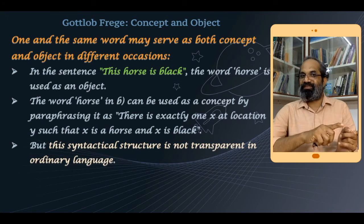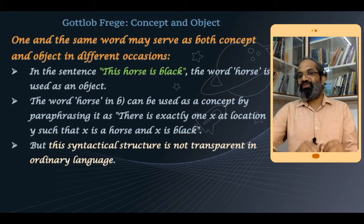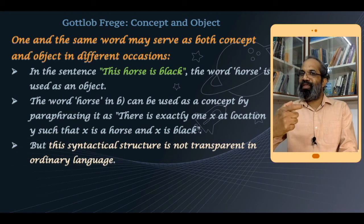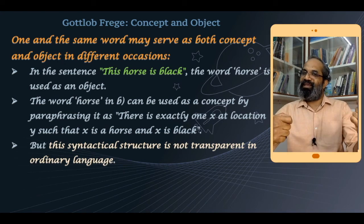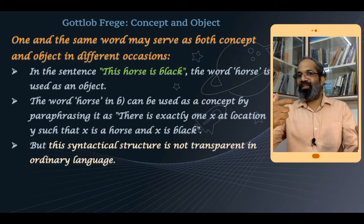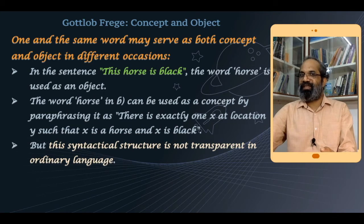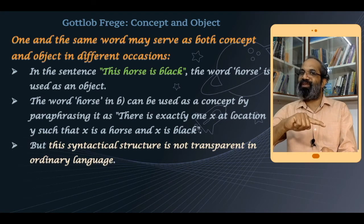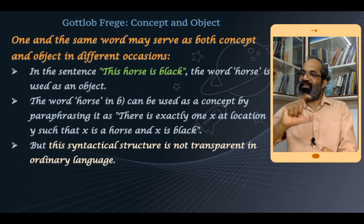Frege gives a similar example: in 'Whales are mammals,' both 'whales' and 'mammals' are used as concepts — 'whales' is grammatically the subject but does not refer to a particular whale. However, in 'The whale struck the ship,' 'the whale' refers to a particular whale and thus acts as an object. So one and the same word, 'whale,' can act as an object in one proposition and as a concept in another.